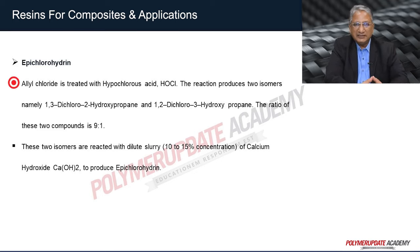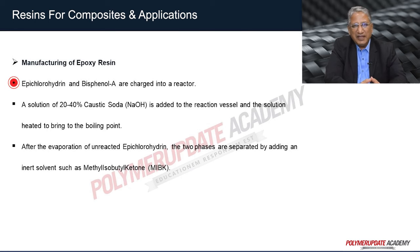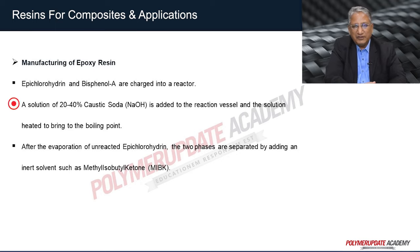Allyl chloride is treated with hypochlorous acid (HOCl) and the reaction produces two isomers: 1,3-dichlorohydroxypropane and 1,2-dichlorohydroxypropane, in a ratio of 9 to 1. These two isomers are reacted with a dilute slurry of 10 to 15% concentration of calcium hydroxide (Ca(OH)₂) to produce epichlorohydrin. Epichlorohydrin and bisphenol A are then charged into a reactor. A solution of 20 to 40% caustic soda (NaOH) is added and the solution is heated to boiling point. After evaporation of unreacted epichlorohydrin, the two phases are separated by adding an inert solvent such as methyl isobutyl ketone. The resin is then washed with water multiple times to remove the byproduct NaCl.